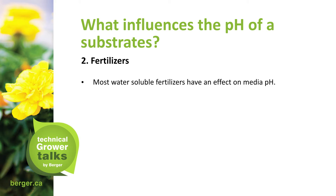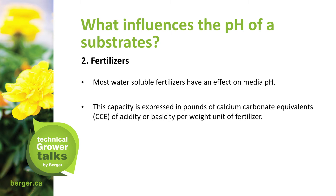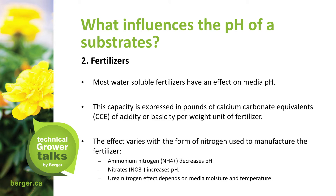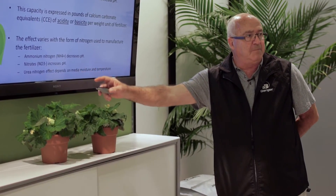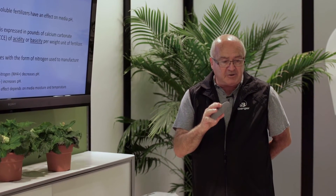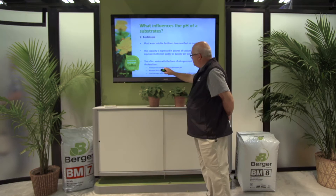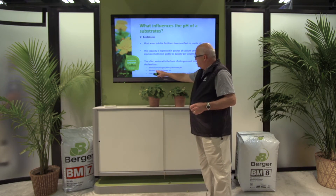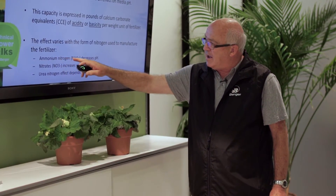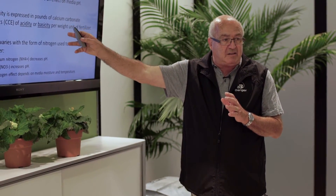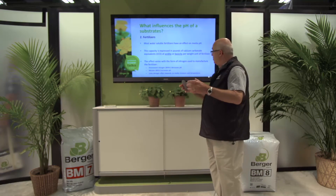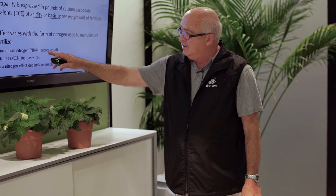What influences the pH of substrates? Fertilizers. Most water-soluble fertilizers have an effect on the media pH. The capacity is expressed in pounds of calcium carbonate equivalent (CCE) of acidity or basicity per weight unit of fertilizer. The effect varies with the form of nitrogen used to manufacture the fertilizer. Ammonium nitrogen decreases pH because of a process called nitrification — once the fertilizer gets into the soil, nitrogen bacteria break down the ammonium to a more usable form of nitrogen, which is nitrate. In that process, hydrogen ions are released, so every time a hydrogen ion is released into the soil, the pH goes down.